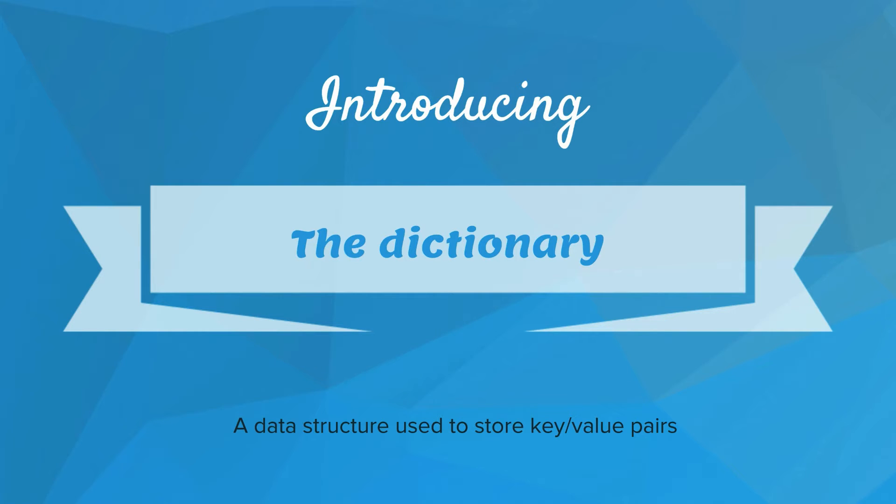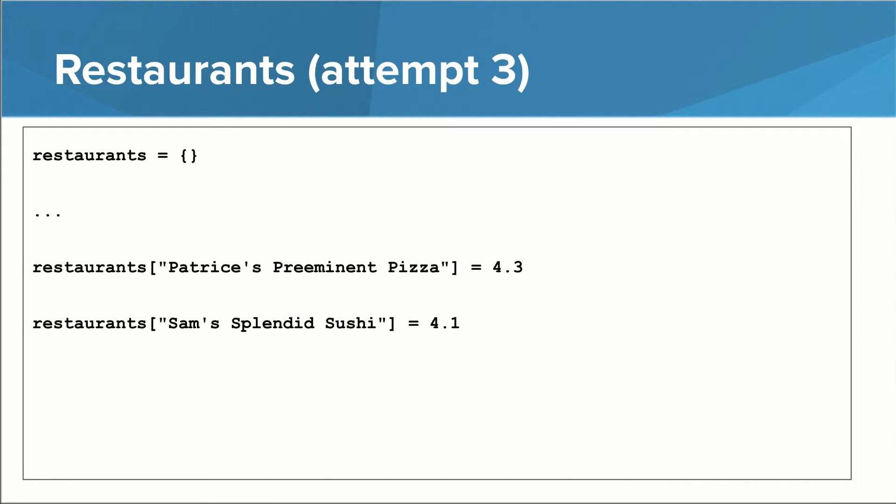A dictionary is a data structure used to store key value pairs. Let's go back to the restaurant example. In this version, we use a dictionary. We can declare an empty dictionary like this. It is similar to the way we declare an empty list, except it uses curly braces instead of square brackets.